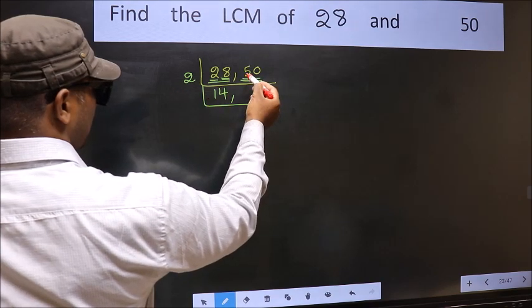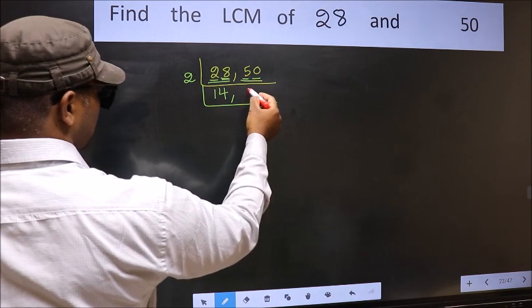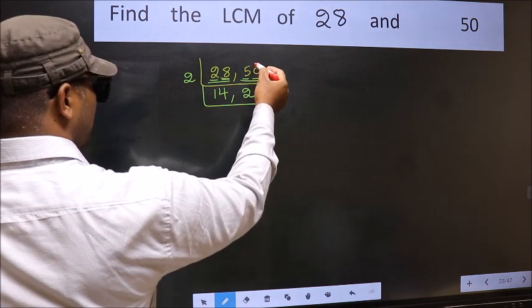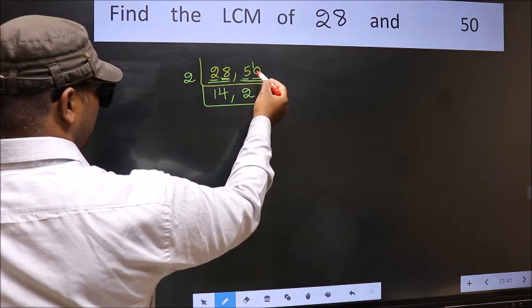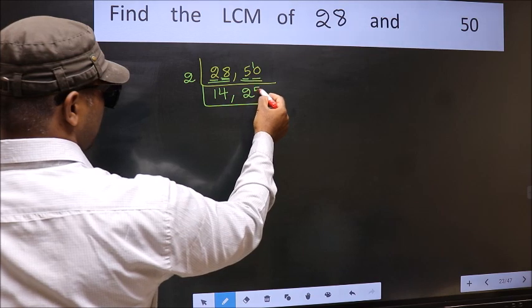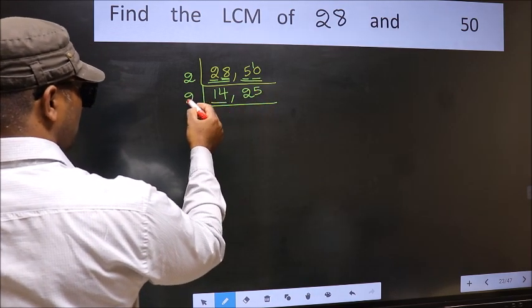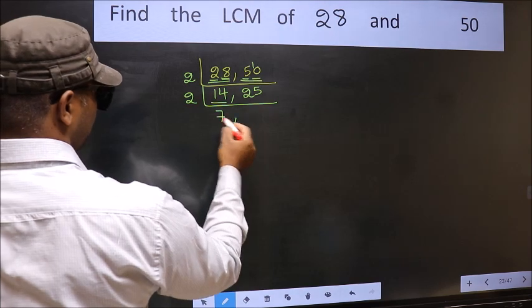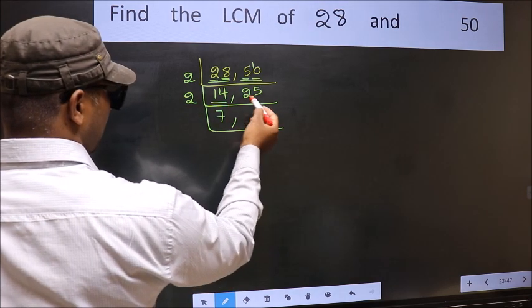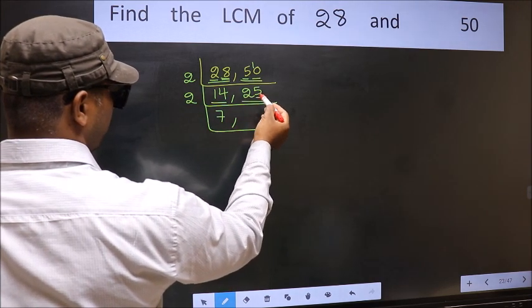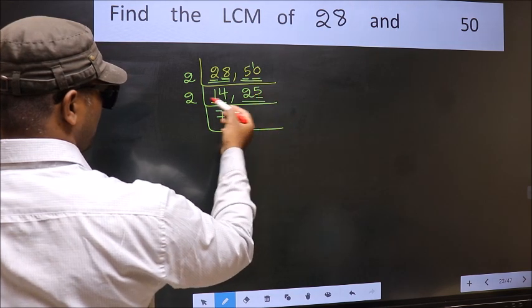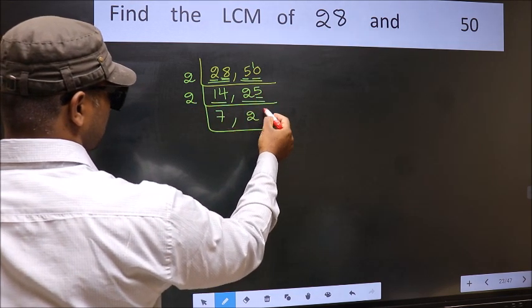First number 5, a number close to 5 in 2 table is 2, 2 is 4. 5 minus 4, 1, 1 carried forward 10. When do we get 10 in 2 table? 2, 5 is 10. Now here we have 14. 14 is 2, 7 is 14. The other number 25, last digit 5, not even, so this is not divisible by 2. So we write it down as it is.